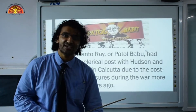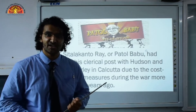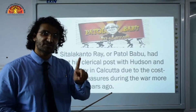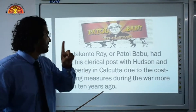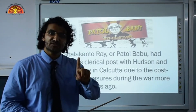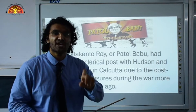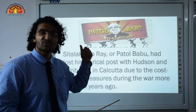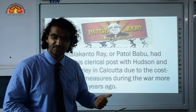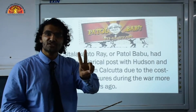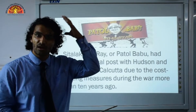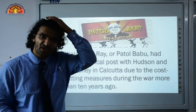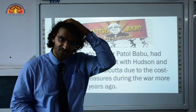Before we start this lesson, there are certain things you need to keep in mind. Number 1, this chapter is set in the past — in the time when the capital city of West Bengal, now known as Kolkata, was then known as Calcutta. It is set in the 1930s. Number 2, the main character Patul Babu is a bald man — bald means he has no hair on the top part of his head.